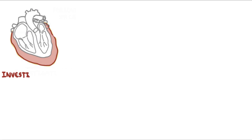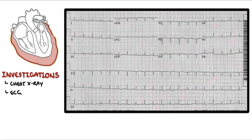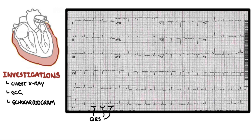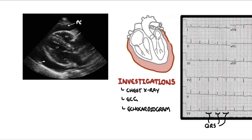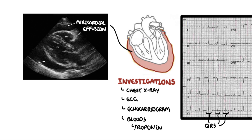Investigations for pericardial effusion or tamponade include chest x-ray, which shows a grossly enlarged heart in tamponade. ECG will show electrical alternans — alternating QRS waveforms that are big and small — due to the pericardial fluid encasing the heart affecting the electrical activity received by the ECG. An echocardiogram is useful for assessing and quantifying the amount of pericardial effusion and its impact, including backflow. Blood tests help identify potential causes of the effusion, including troponin to look for myocardial infarction and an autoimmune screen.